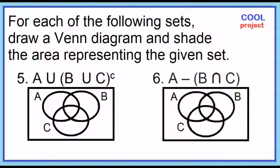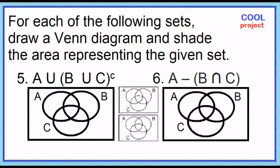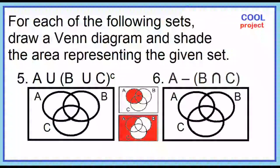Number five: the union of A and the complement of the quantity B union C. Let's use two Venn diagrams to illustrate this. This is set A and this is the complement of the quantity B union C. Combine the shaded areas — this is the result.